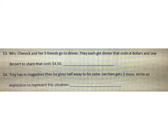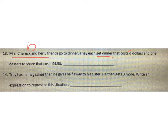These ones are going to be a little trickier. They may have multiple steps, so take your time thinking about it. Pause the video and try the next two. Ms. Sherrick and her five friends go to dinner — that's a total of six people. They each get dinner that costs D dollars and share one dessert that costs $4.50. So it's going to be 6D — six times the D dollars for each dinner — plus $4.50. So 6D plus $4.50 is your expression.